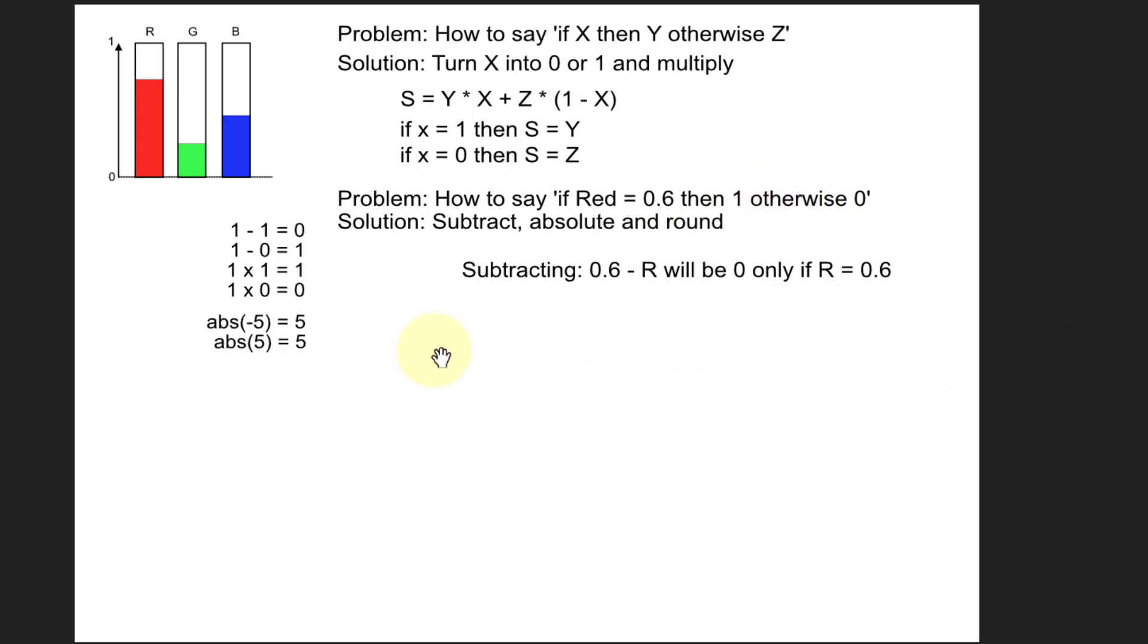A formula you can use in this is abs or absolute, and all this very simply does is it throws away the minus sign. So if red is say 0.9, it would be minus 0.3, but throw away the minus sign, it's plus 0.3, so you can still get it back to that. So removing negative, you do something like this: abs of 0.6 minus R, and abs is short for absolute.